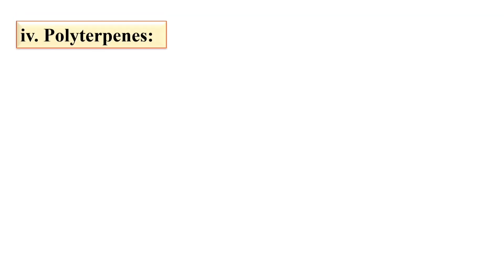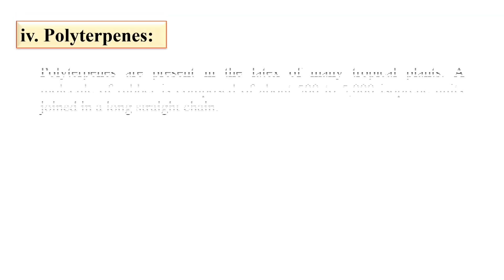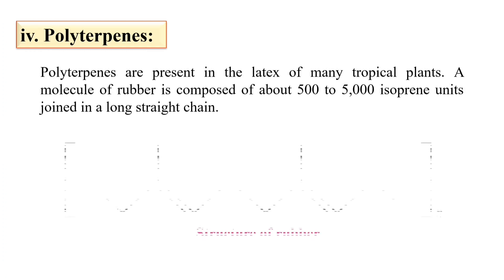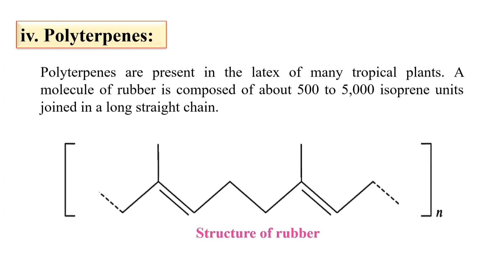Next, polyterpenes — meaning many units of isoprene. These are present in many tropical plants. Here is the structure of rubber. The example of polyterpenes includes rubber, and there are maybe about 500 to 5000 isoprene units joined in the case of rubber.